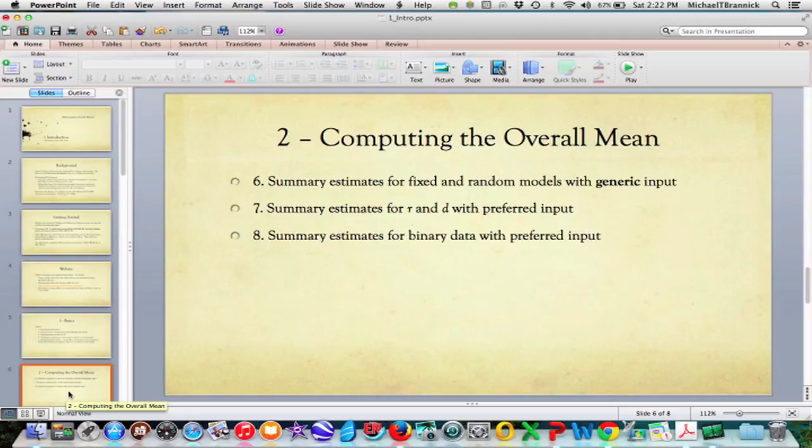For computing the overall mean or summary effect size, there are three videos. First is summary estimates for fixed and random models with generic input. As long as you have an effect size and its variance or standard error, you can input that as generic input and run your meta-analysis.